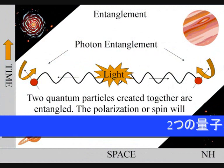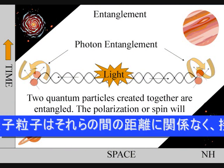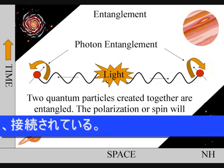Two quantum particles that are created together are entangled. The polarization or spin will be connected however great the distance between them becomes.